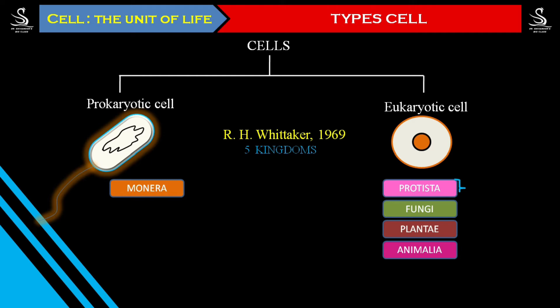Out of the eukaryotic organisms, some of them are made of a single cell — we call them unicellular organisms. Amoeba, Paramecium, and Euglena all belong to Kingdom Protista — eukaryotic cells belonging to Kingdom Protista. Whatever organisms belong to Fungi, Plantae, and Kingdom Animalia — all of them are multicellular organisms.